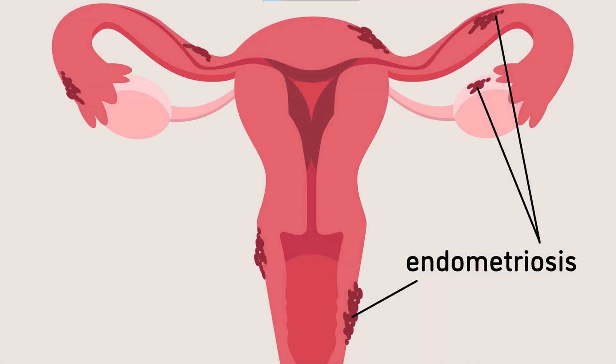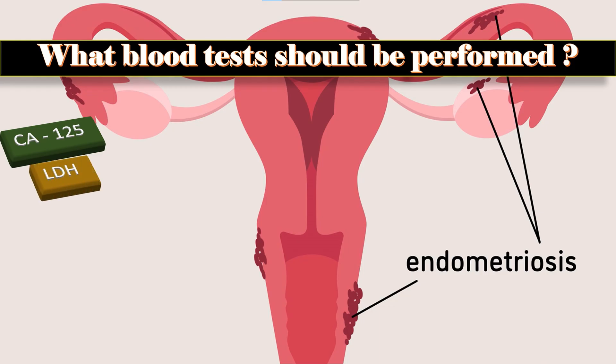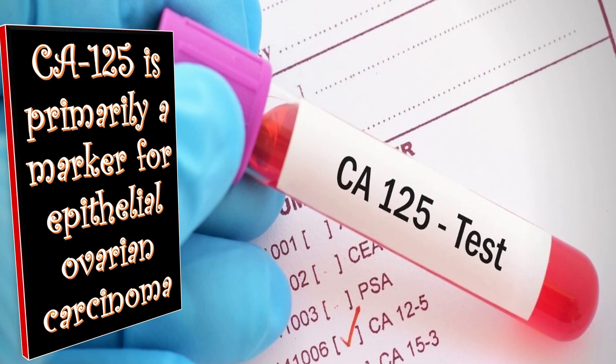Regarding blood tests: a serum CA-125 assay does not need to be undertaken in all pre-menopausal women when an ultrasonographic diagnosis of simple ovarian cyst has been made. LDH, alpha-fetoprotein, and hCG should be measured in all women under 40 with a complex ovarian mass because of the possibility of germ cell tumors. CA-125 is primarily a marker for epithelial ovarian carcinoma and is only raised in 50% of early stage disease.